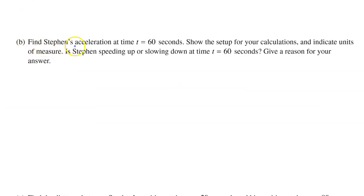Part B: Find Stephen's acceleration at time t equals 60 seconds. Show the setup for your calculations and indicate units of measure. Is Stephen speeding up or slowing down at time t equals 60 seconds? Give a reason for your answer. First, we need to find Stephen's acceleration at time t equals 60 seconds. So that's acceleration at 60.